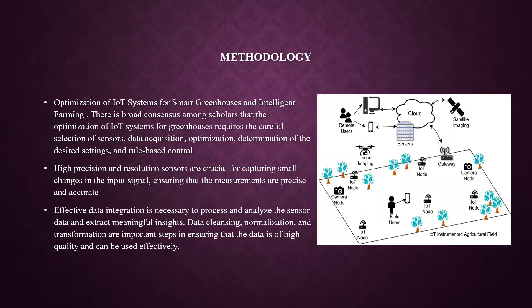Regarding methodology — optimization of IoT systems for smart greenhouses and intelligent farming — there is broad consensus among scholars that optimization requires careful selection of sensors, data acquisition, optimization, determination of desired settings, and rule-based control.